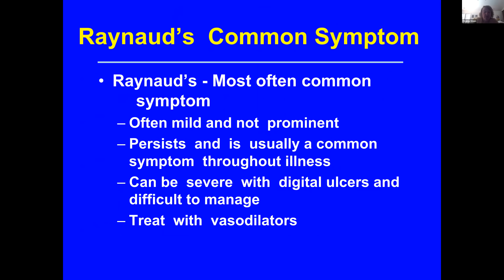We're going to go through some of the features seen in patients with mixed connective and undifferentiated connective tissue disease. You'll see how common they can be and how frequently they look totally similar to scleroderma. Raynaud's is the most common symptom, and really in all of these diseases they're all the same. It may only be mild and not prominent, but it usually is persistent and occurs throughout the whole illness, and can be severe with digital ulcers, difficult to manage just like in scleroderma.